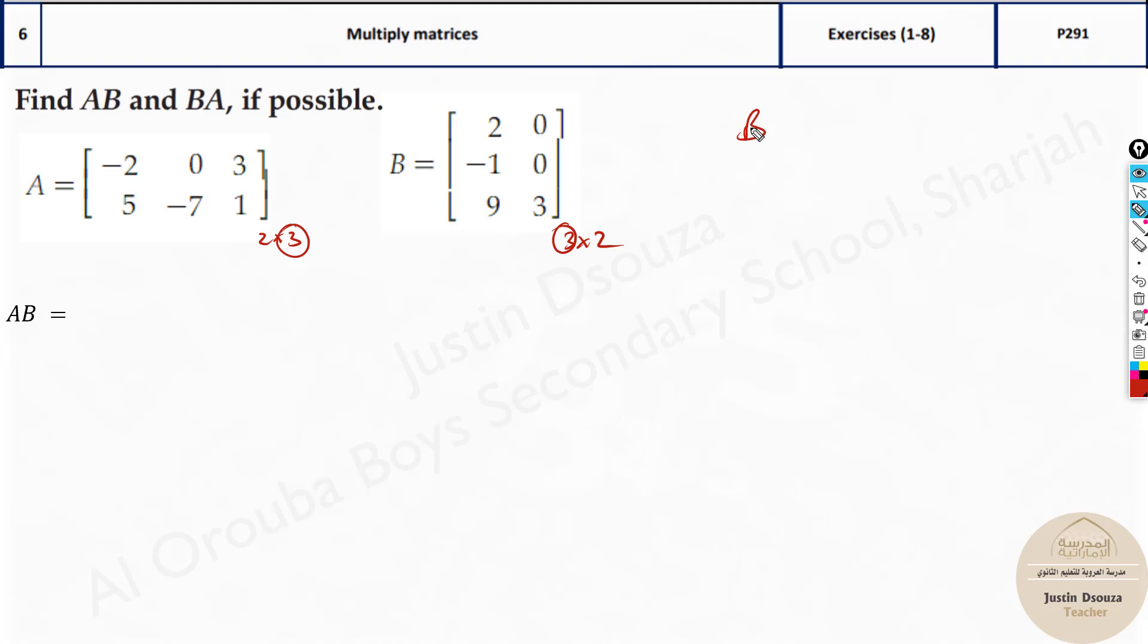So if I'm multiplying B and A what happens is this is 3 cross 2 times 2 cross 3. This also is possible. Over here both are possible. Whereas if this was not matching in the other problems it's not possible. You can directly put in the calculator and check it out.